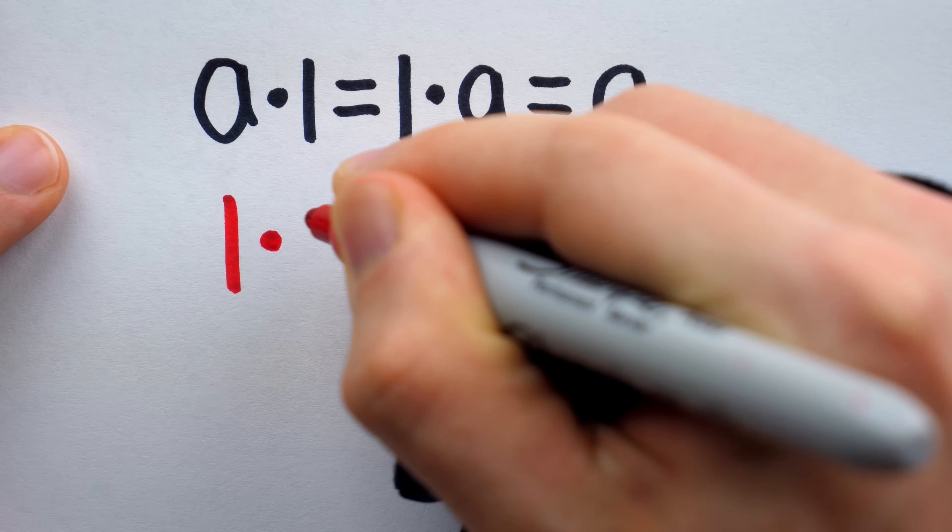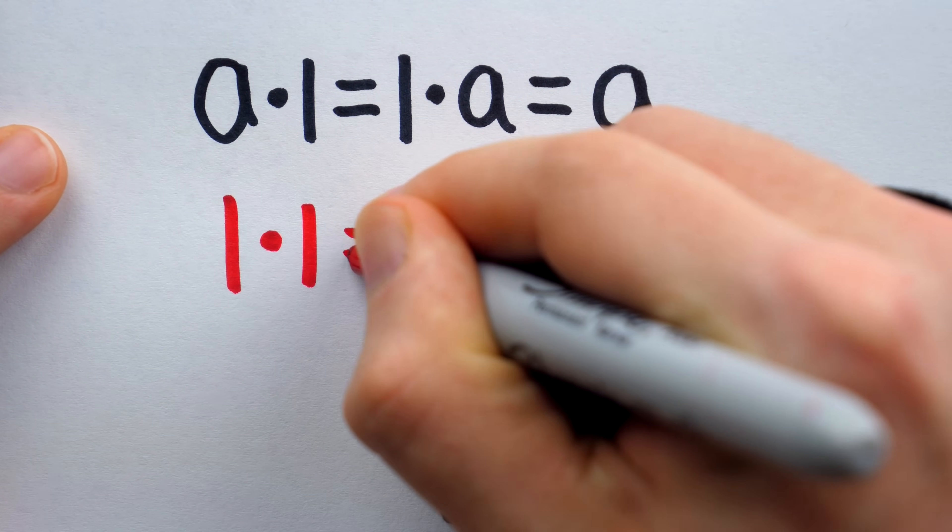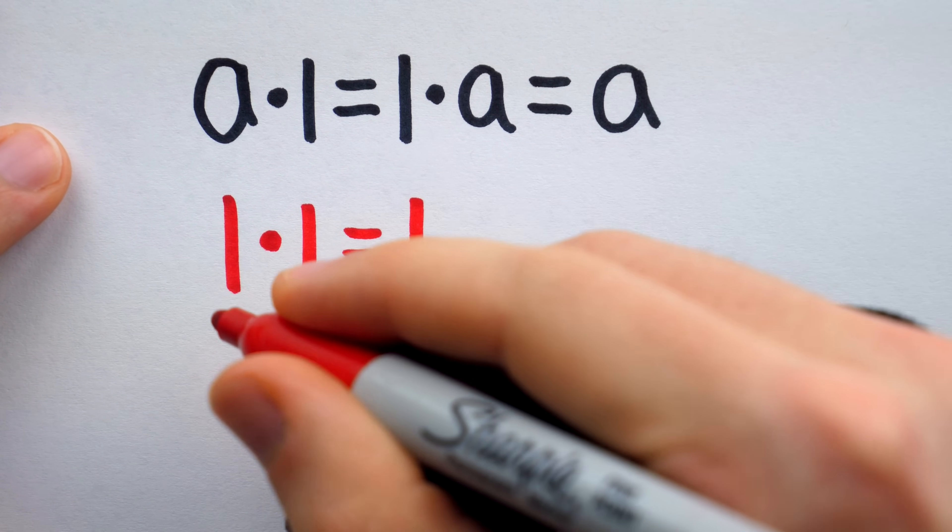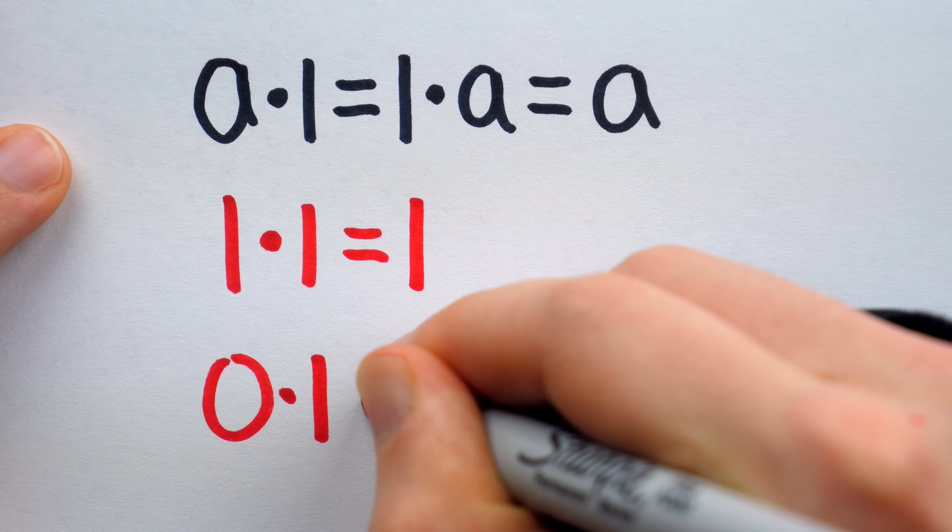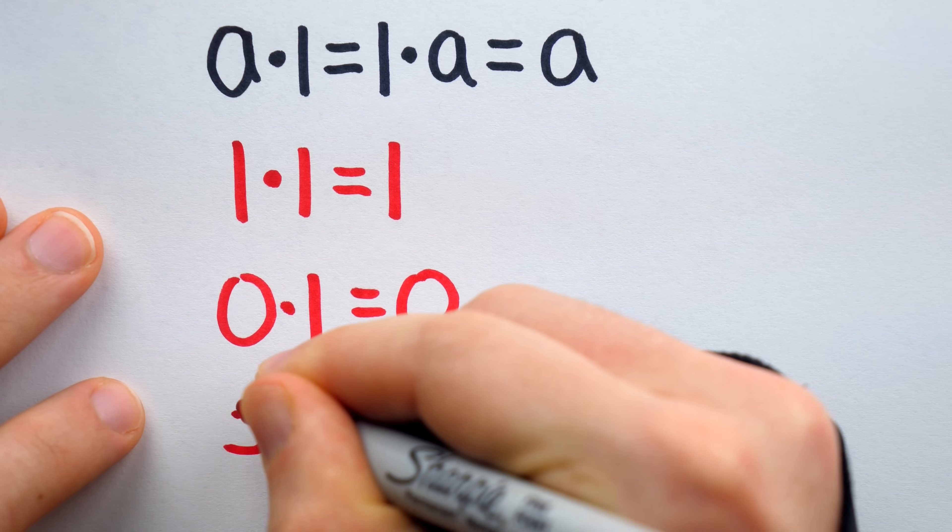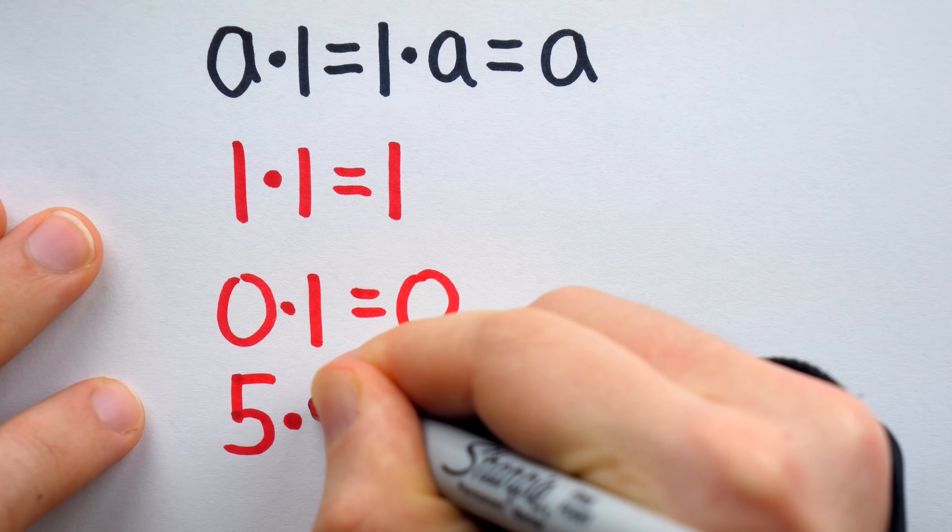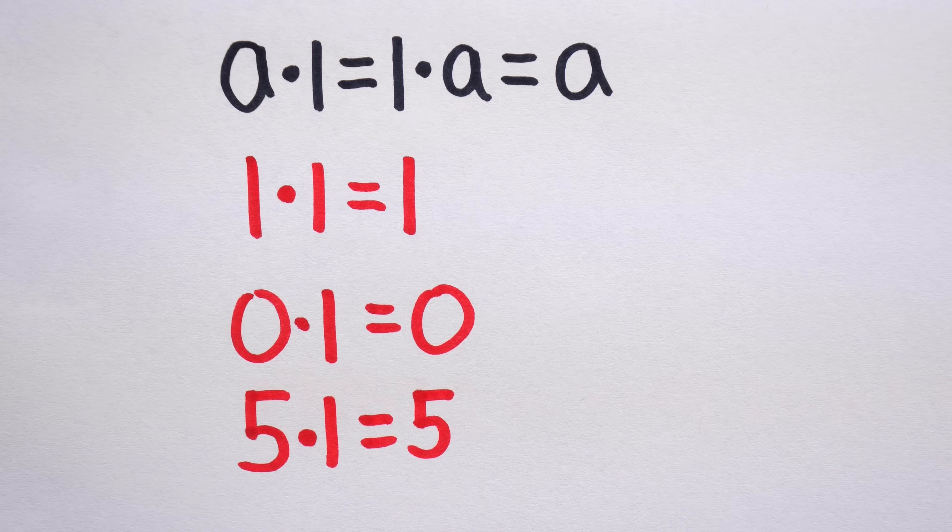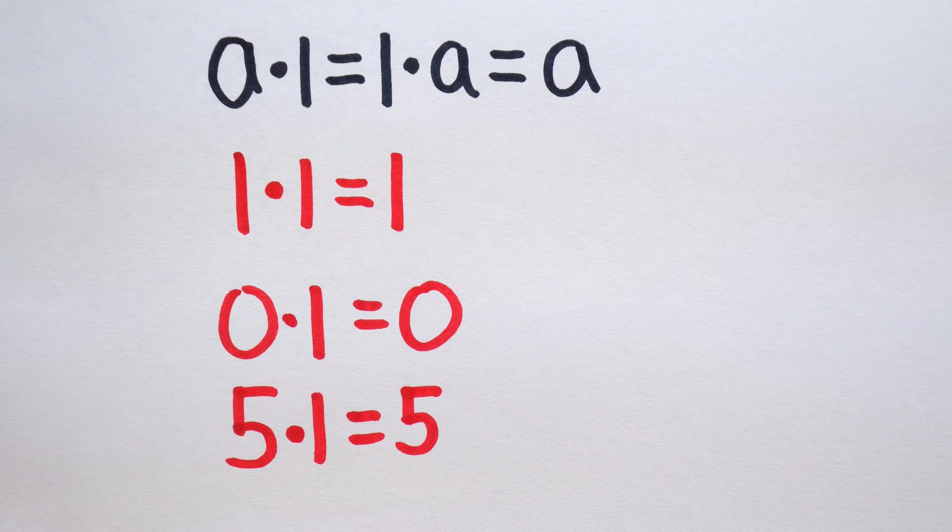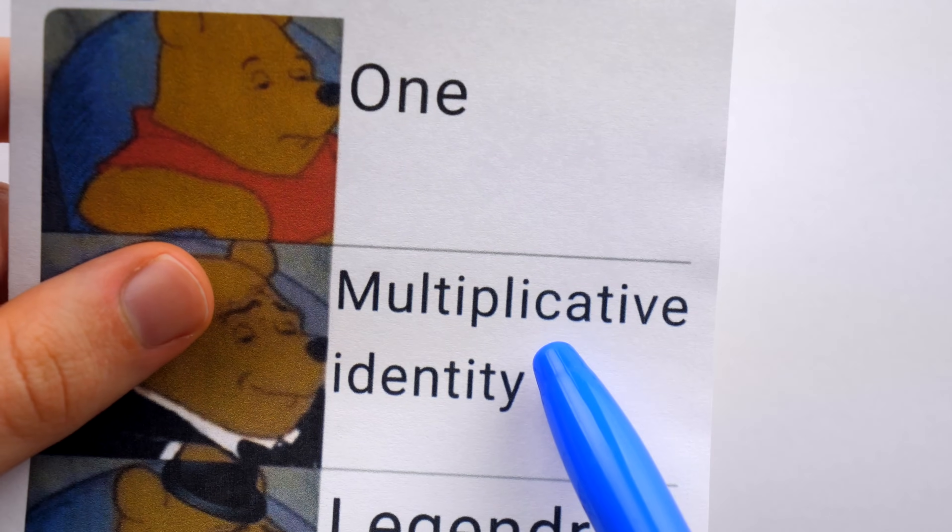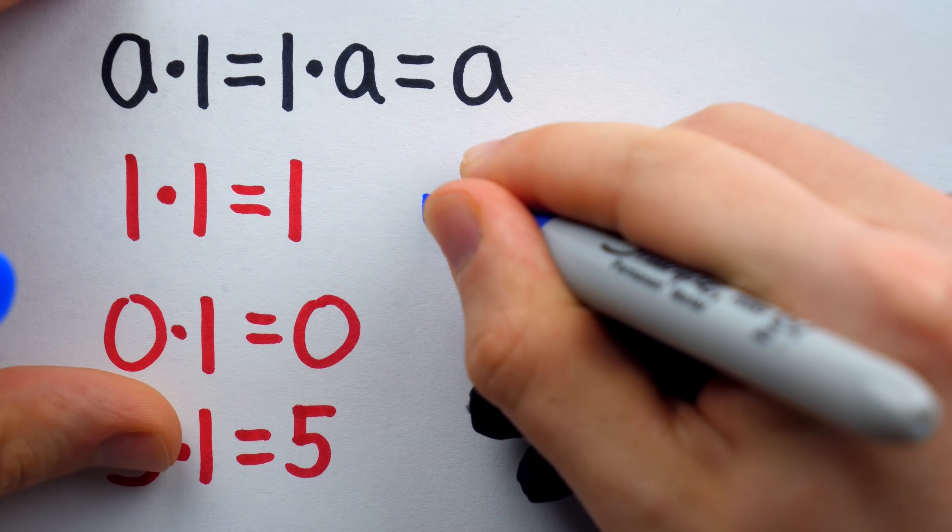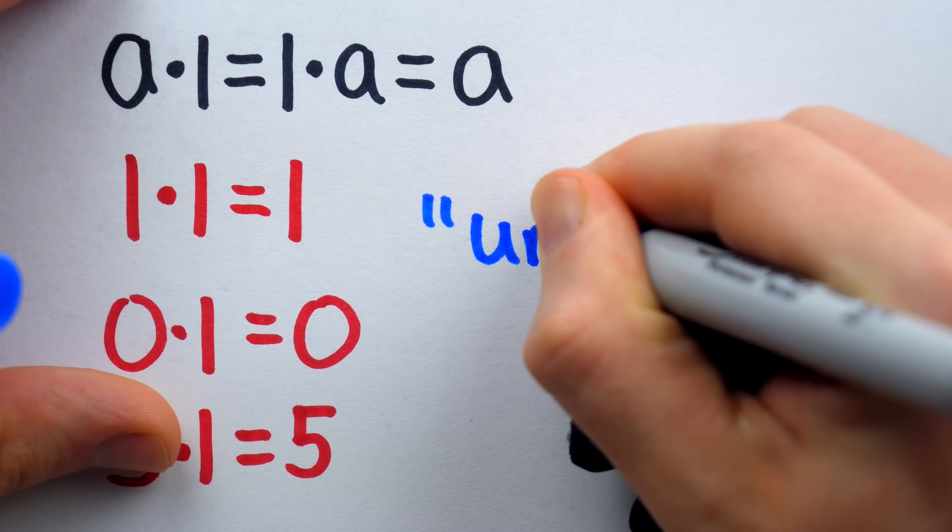Since multiplication by one doesn't change a number's identity, one earns this special title of multiplicative identity. Indeed, you could pass a whole afternoon by yourself just bearing witness to one's awesome power. One times one, that's one. Zero times one, that's zero. As a fun bonus term, which isn't as much of a mouthful as multiplicative identity, but which does surpass it in its simplistic poeticism, sometimes the multiplicative identity is referred to simply as unity.